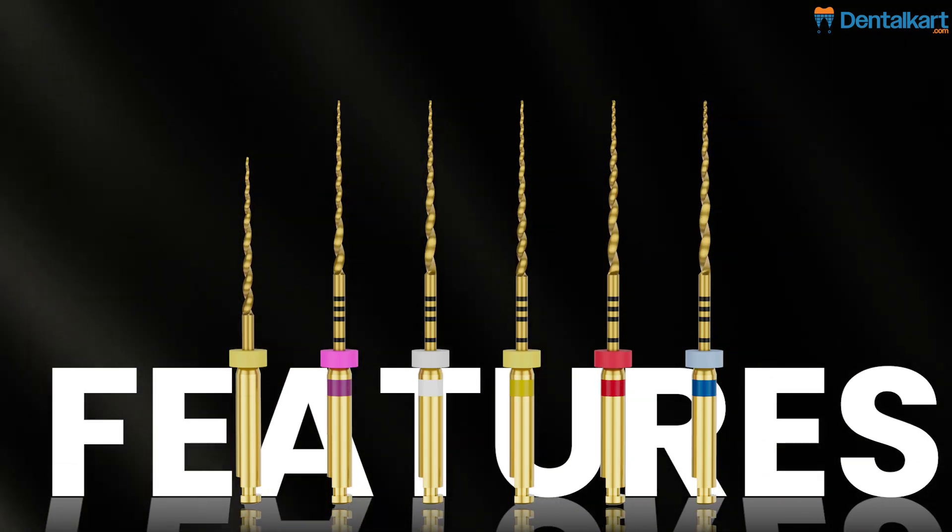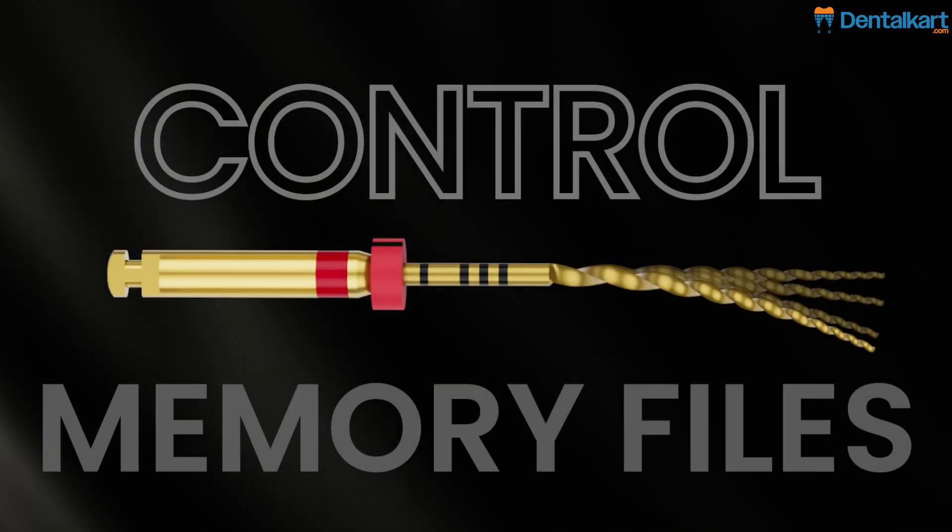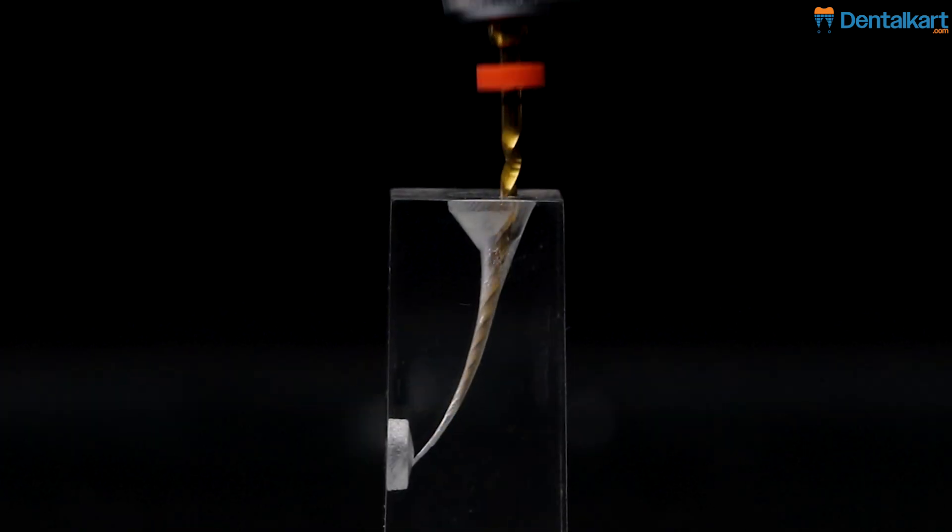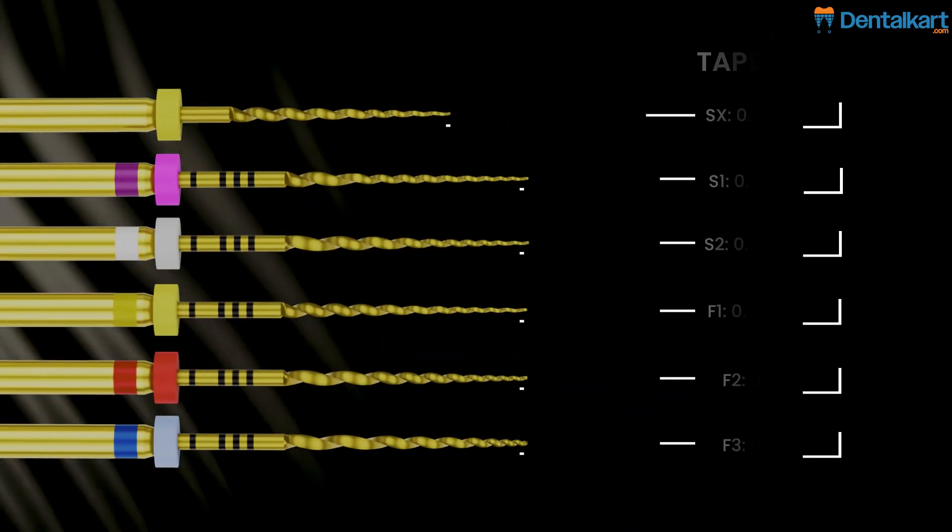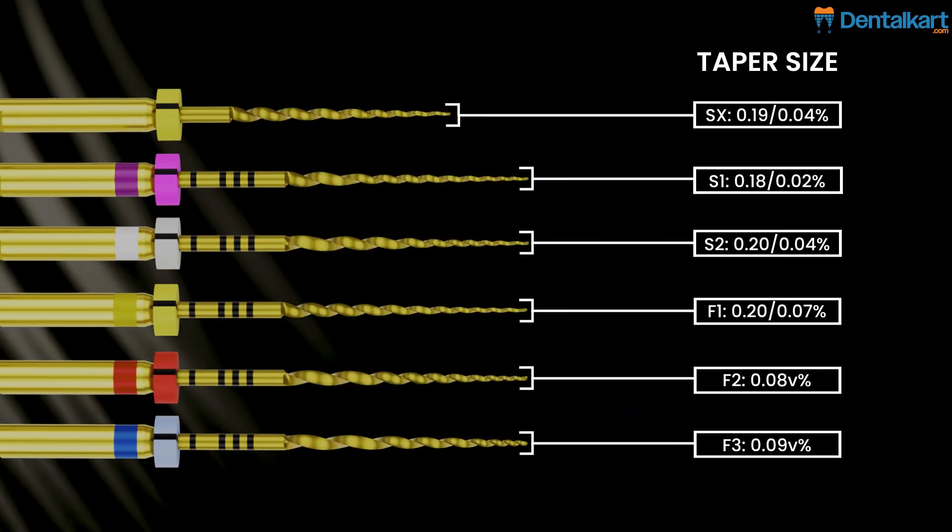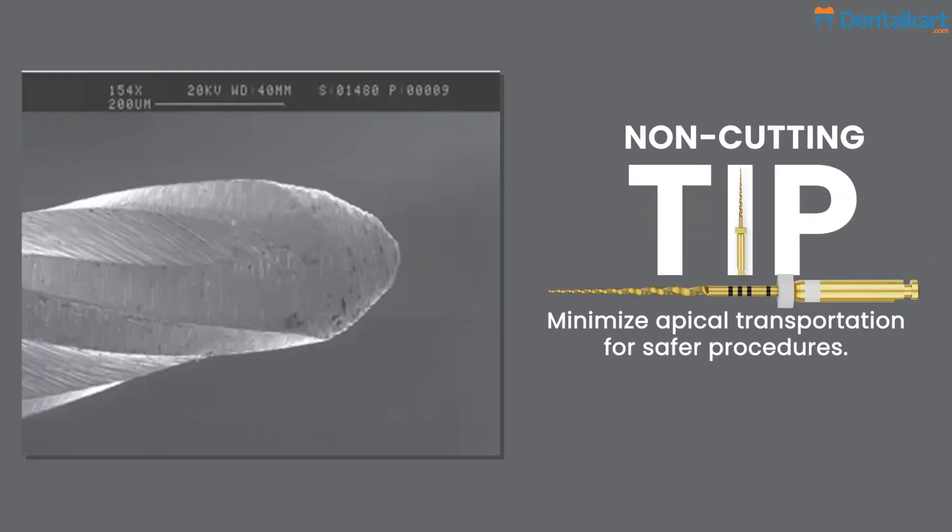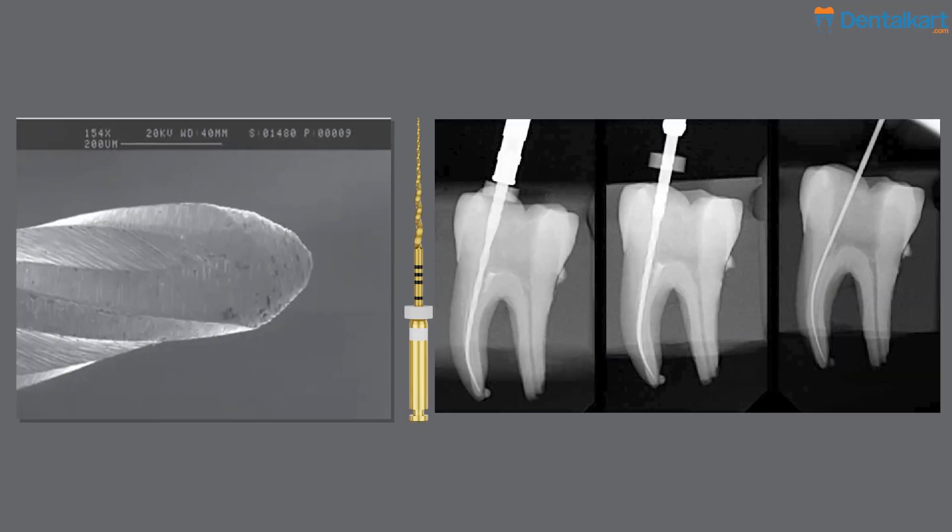Let's see what are the features of Nano Gold Rotary Files. Control memory files allow pre-curving and retain the canal shape even when removed. Variable taper design adapts seamlessly to various canal anatomies. Non-cutting tip minimizes apical transportation for safer procedures.